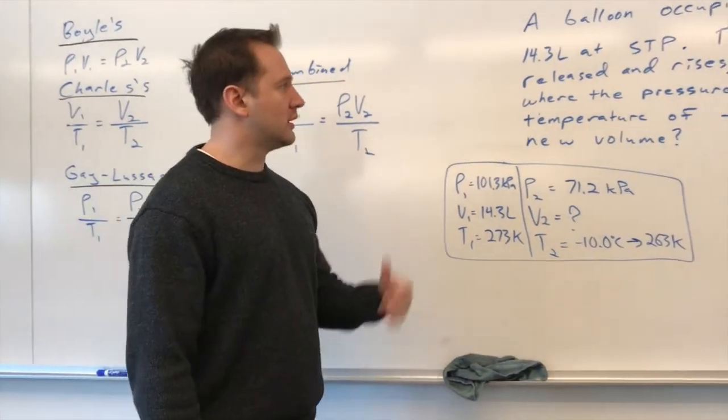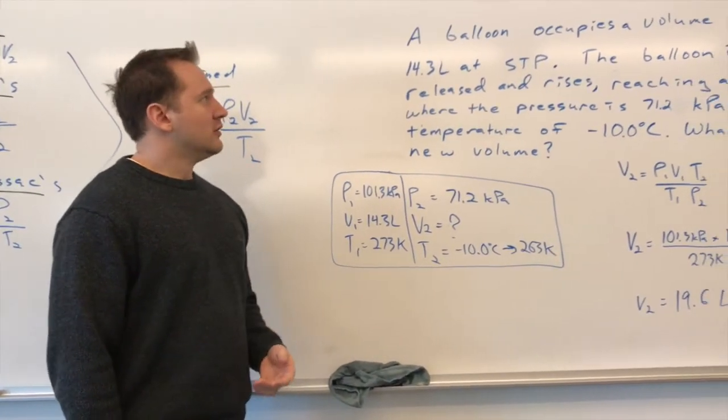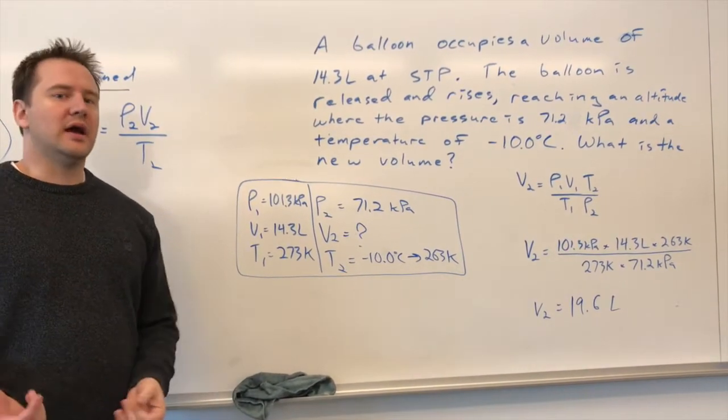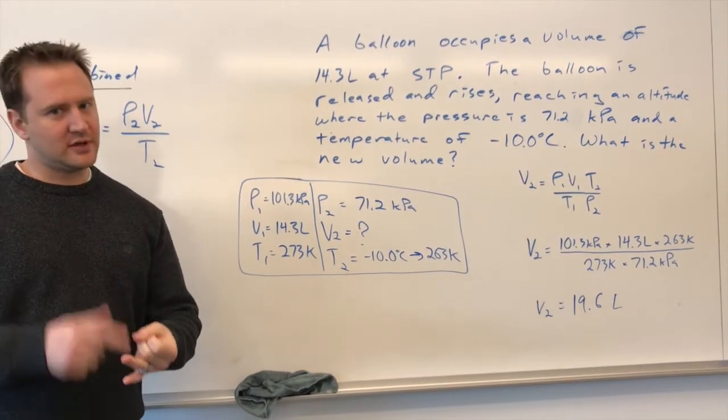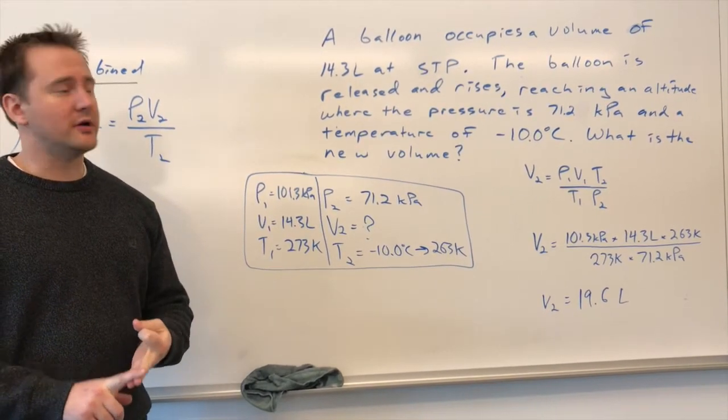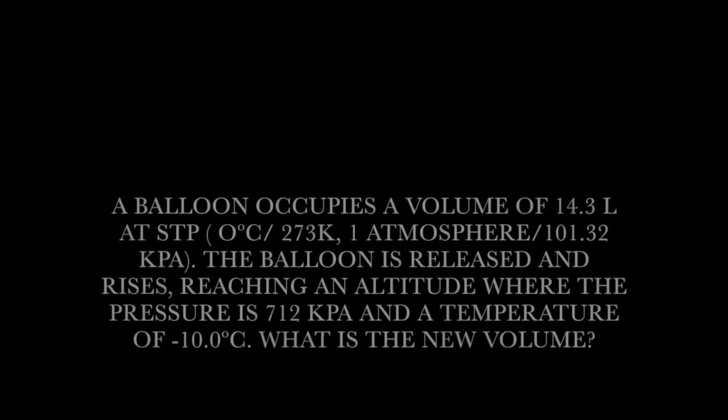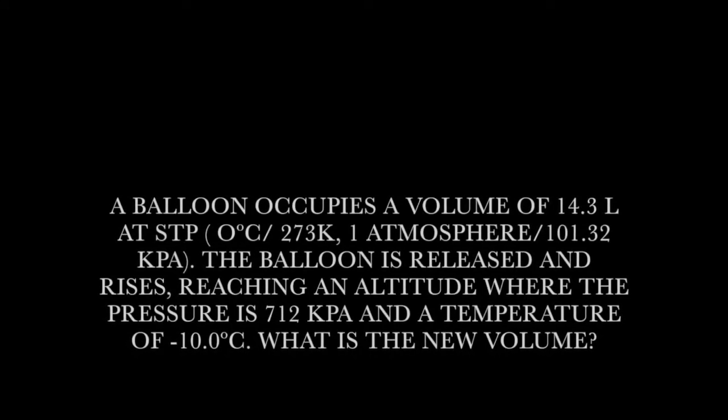So let's do an example problem where we look at all of these variables changing. So we'll say a balloon that rises in altitude. You're going to have a different pressure, you're going to have a different temperature, and its volume is going to change as a result. So the sample problem I put up here, a balloon occupies a volume of 14.3 liters at STP.